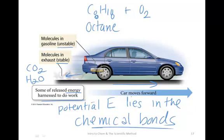When we react octane with oxygen to produce carbon dioxide and water, we break bonds and form new bonds. The relative positions of the electrons in those bonds give those molecules their potential energy. When we break and form new bonds, we transfer that potential energy to kinetic energy in the form of heat, or harness that kinetic energy to do work such as driving a car.